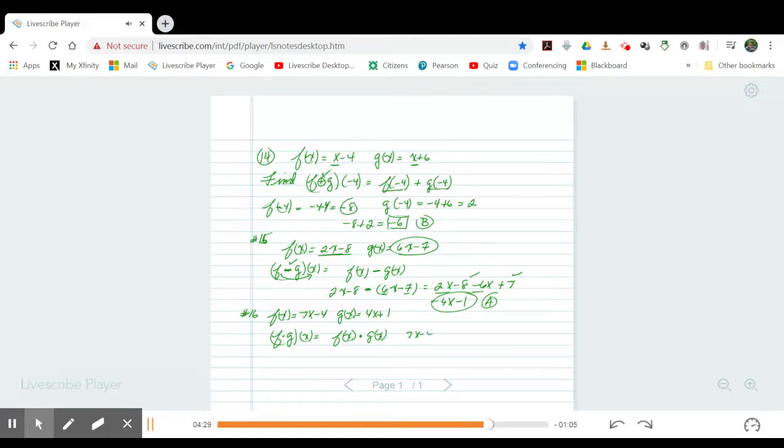This is your basic FOIL problem. 7x times 4x, 28x squared. Up top, the outside terms, 7x times a positive 1 is a positive 7x minus 4 times 4x minus 16x. And a minus 4 times a positive 1 is a negative 4.